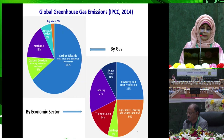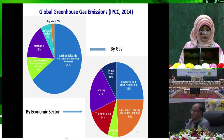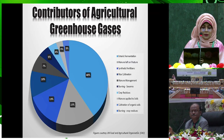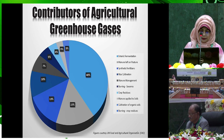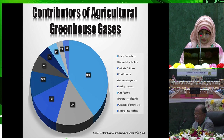If we see the IPCC 2014 Global Greenhouse Gas Emission data, we see the agriculture sector contributes more to greenhouse gas emissions. The contributors of agricultural greenhouse gases include enteric fermentation, manure left on pasture, synthetic fertilizer, etc.